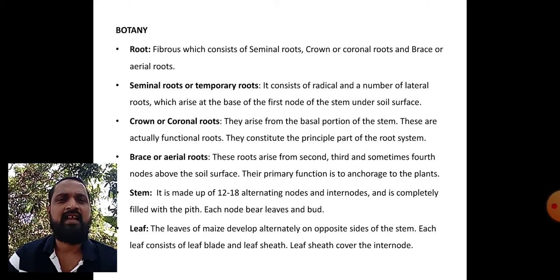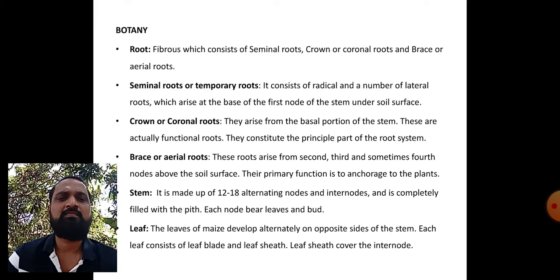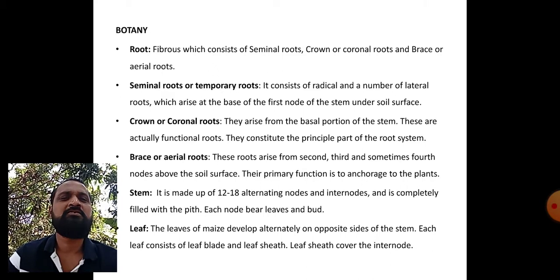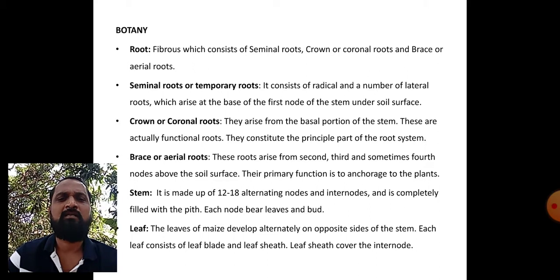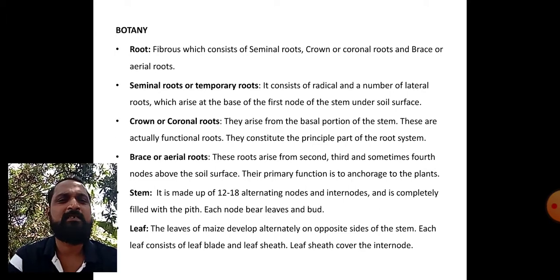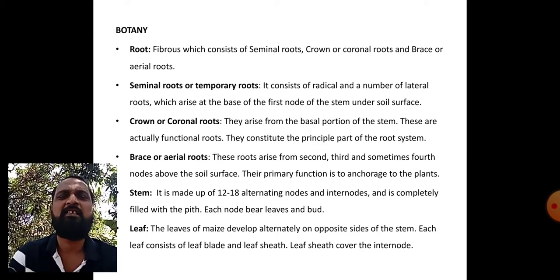Crown or coronal roots arise from the basal portion of the stem. These are the functional roots; they constitute the principal part of the root system and give good mechanical support to the crop. Brace or aerial roots arise from the second, third, or sometimes fourth nodes above the soil surface, and their primary function is to anchor the plant.